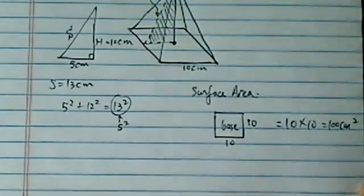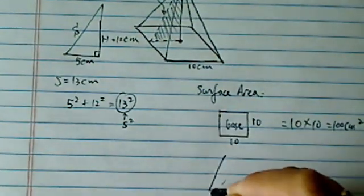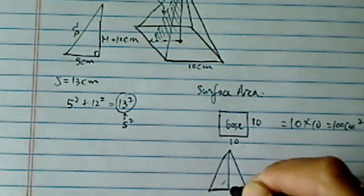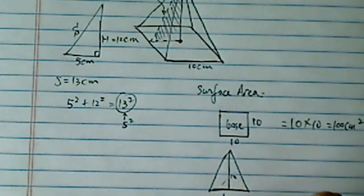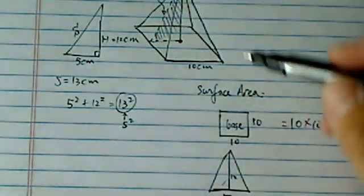And now, all we have to do is find 4 isosceles triangles. They're not quite equilateral. Here's our height, which is 12. Here's our base, which is 5. So, I'm drawing the side face now.